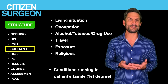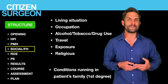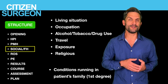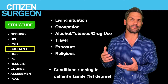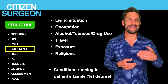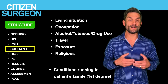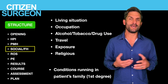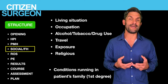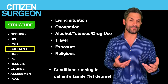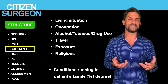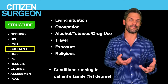How about social and family history? For social history, I like to cover the living situation — for a child, are they with both parents and how does that affect their post-operative course? Is it a foster child? What's the occupation? Is there any alcohol, tobacco, or drug abuse? Is there a travel or exposure history? Are they part of a religion that may impact their medical care — for example, a Jehovah's Witness where you'll need to make decisions about blood products. For family history, focus on inherited conditions among first-degree relatives.